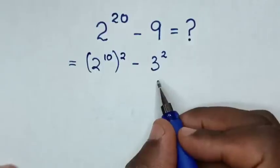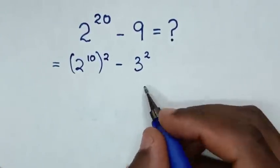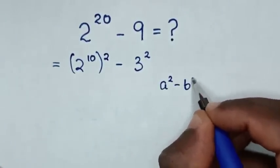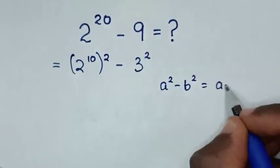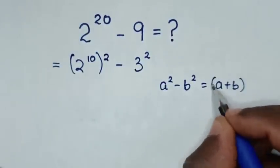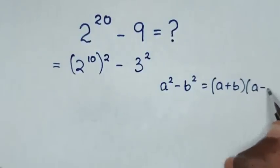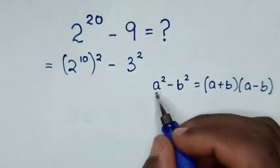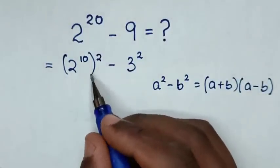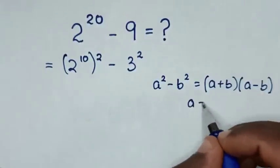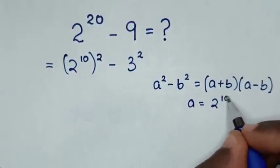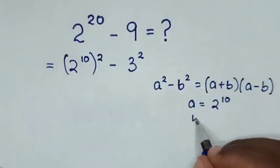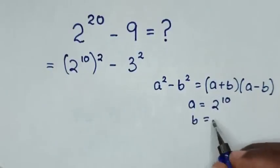This is in the form of a perfect square difference. So we'll apply the rule: a squared minus b squared is equal to a plus b, bracket times a minus b. When we compare a squared with 2 power 10 bracket squared, then a is equal to 2 power 10. And when we compare b squared with 3 squared, then b is equal to 3.